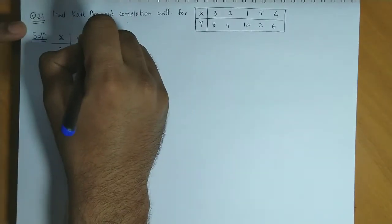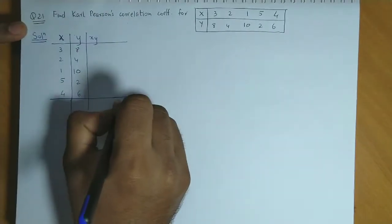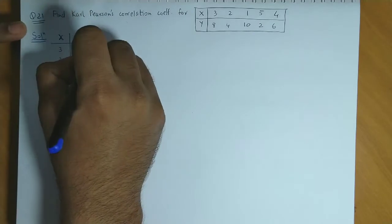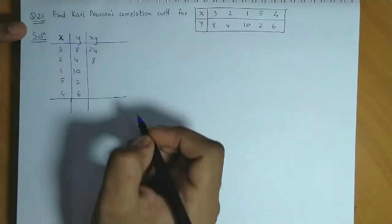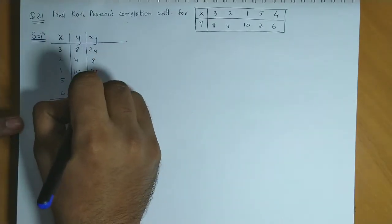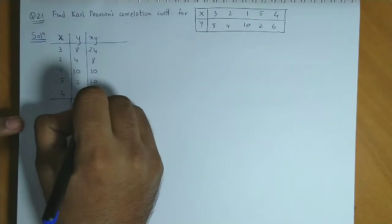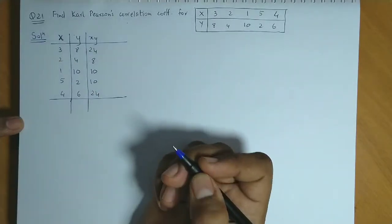The next column will be x into y. So the x times y values are 24, 8, 10, 10, and the last is 24.